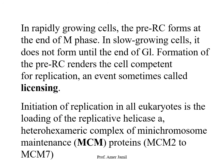In rapidly growing cells, the pre-RC forms at the end of M phase; in slow-growing cells, it doesn't form until the end of G1. Formation of the pre-RC renders the cell competent for replication — this event is sometimes called 'licensing,' meaning the cell has been given the license to start replication. Initiation of replication in all eukaryotes involves the loading of the replicative helicase, which is a heterohexameric complex.